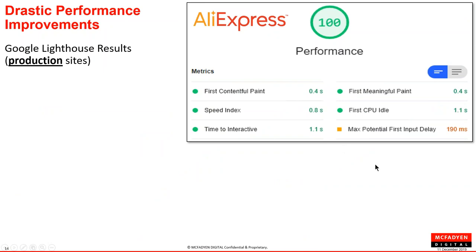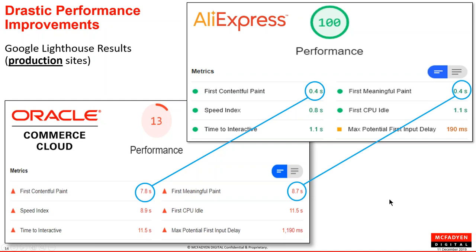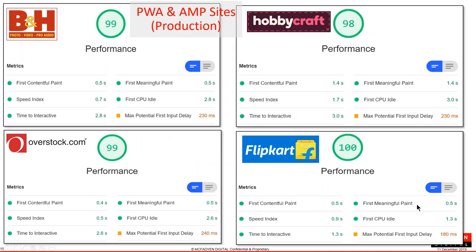Looking at production sites: AliExpress is one of the better-known PWA sites — a multibillion-dollar site running at very large scale. It shows sub-half-second initial numbers and first CPU idle at 1.1 seconds. A production Oracle OCC site — built by the Oracle professional services team — shows numbers closer to 8 or 9 seconds in comparison. This is more about the platform being PWA or not PWA, not necessarily the implementation quality. Many production PWA sites like B&H Photo, Hobbycraft, Flipkart, and Overstock achieve close to 100 scores on Lighthouse with first contentful and meaningful paint around half a second.